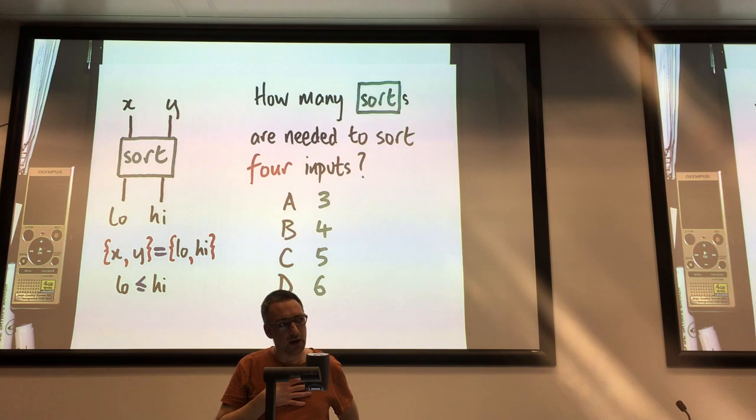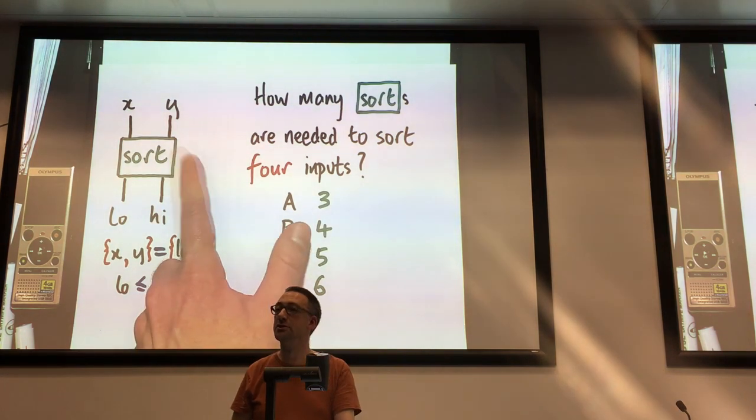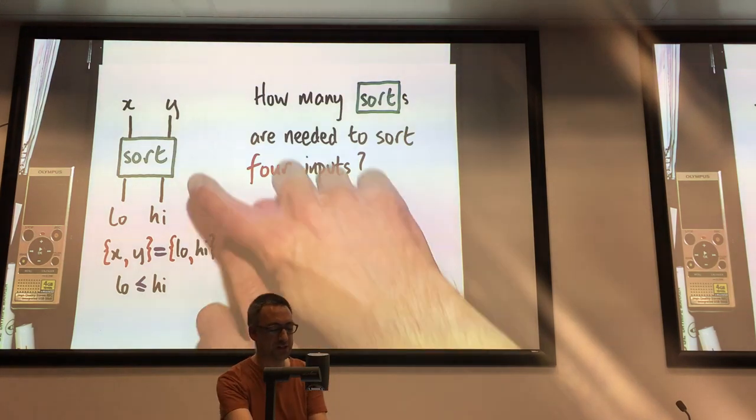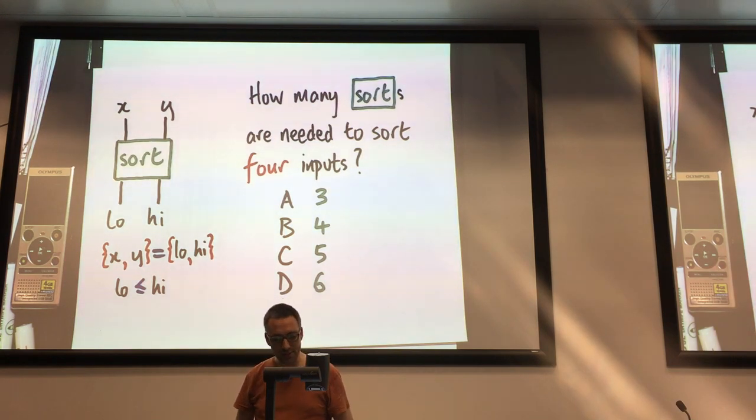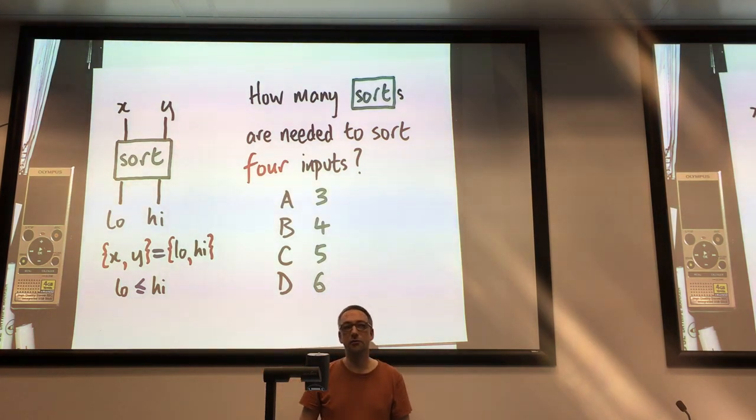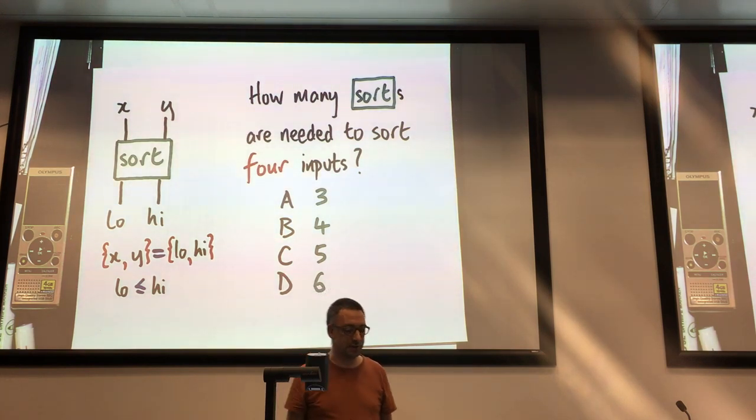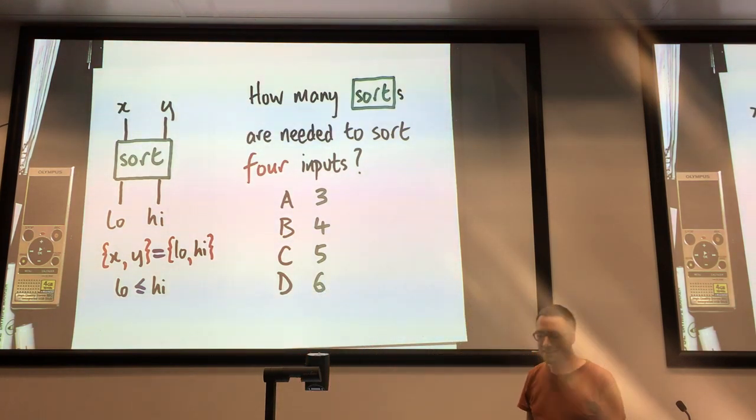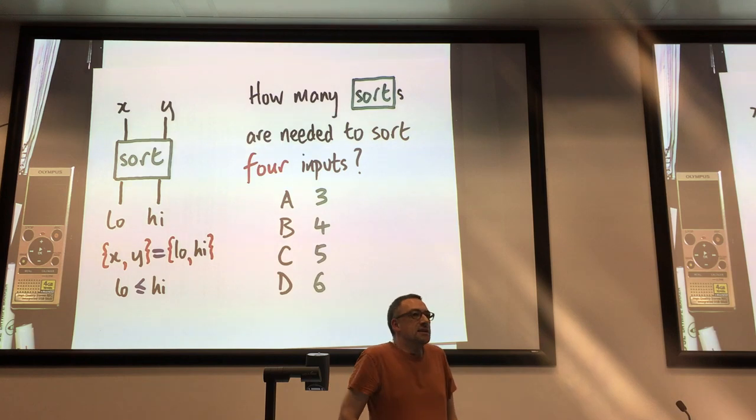So here's a little puzzle for you. If you wanted to sort four inputs, given that you can sort two at a time, you want to wire up a bunch of these boxes together to sort four inputs. How many of the boxes do you think you would need? I'll give you a few minutes to think about it. If you want to scribble something on your one-minute papers, that would be terrific. So how about we think about it, and then we'll use our filters to vote.